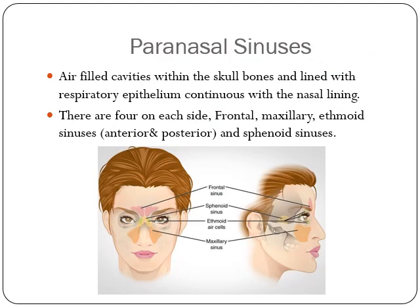The paranasal sinuses are air-filled cavities within the skull bones, lined with ciliated epithelium continuous with the nasal lining. There are four on each side: frontal, maxillary, ethmoid, and sphenoid sinuses, as shown in this picture.